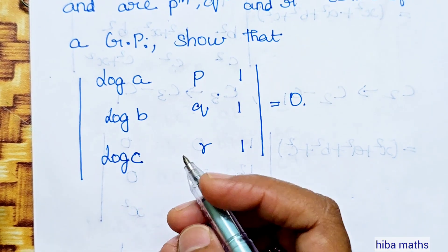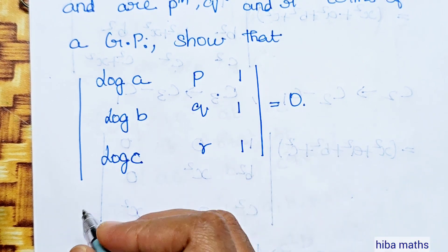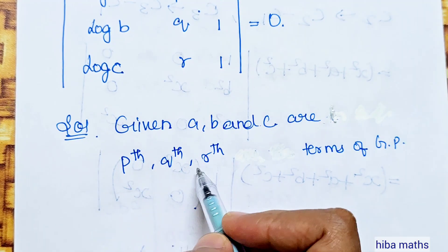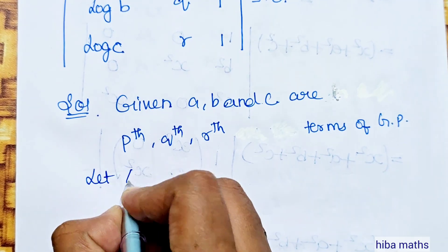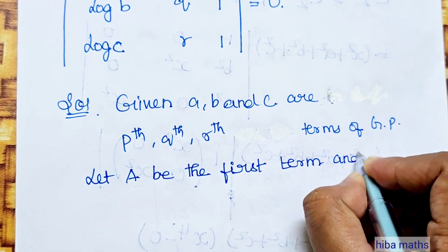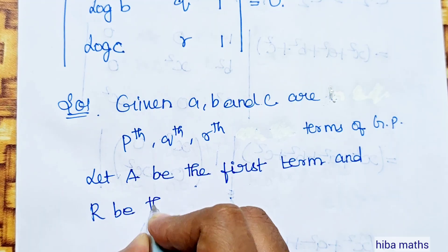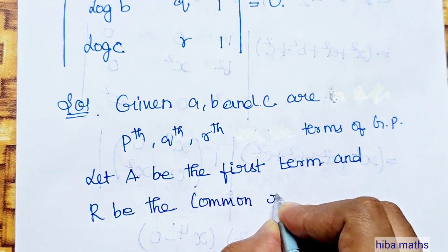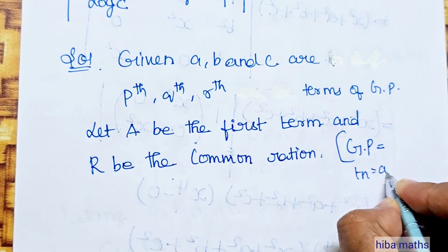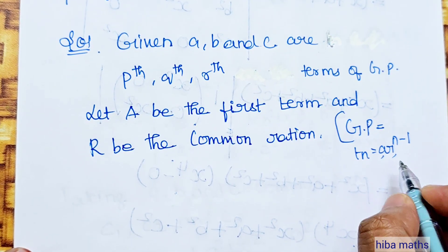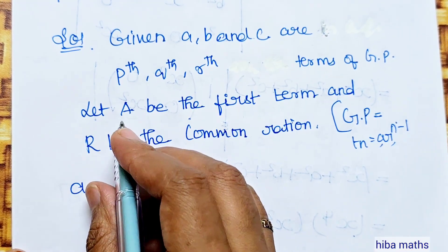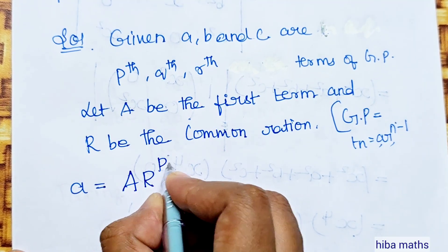If A, B, and C are P, Q, R terms of a GP, let A be the first term and R be the common ratio. GP has first term A and R as the common ratio. So the first term is A, B, and C. A equals AR^(P-1).